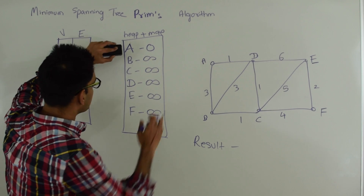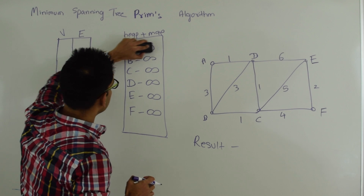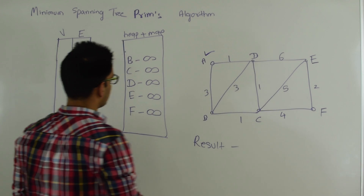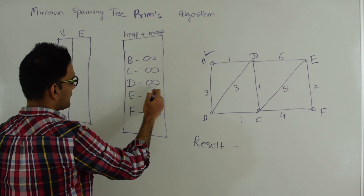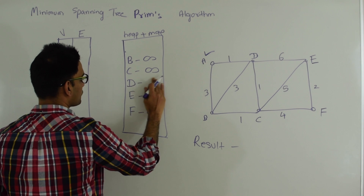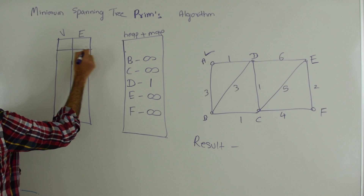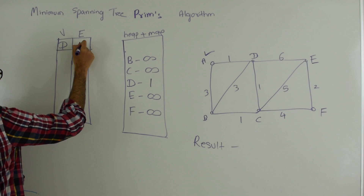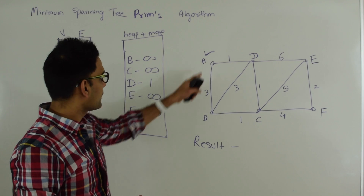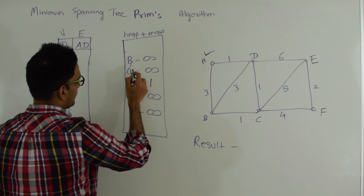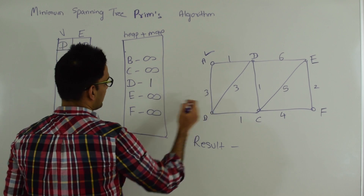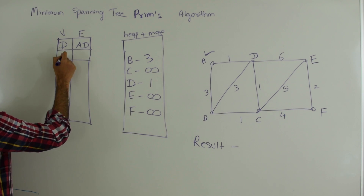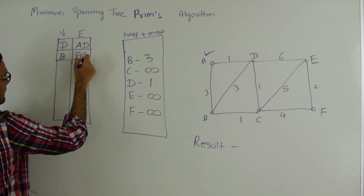Starting the dry run: we do an extract-min — the minimum value is 0, so A comes out of the heap-plus-map. We explore neighbors of A. First neighbor D: D is in the heap-plus-map with value infinity, which is greater than 1, so we update D's value to 1 and record that D's minimum edge is A-D. Then neighbor B: B's value is infinity, which is greater than 3, so we update B's value to 3 and record that B's minimum edge is A-B.